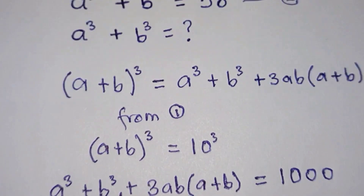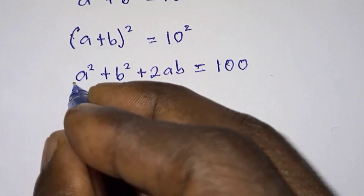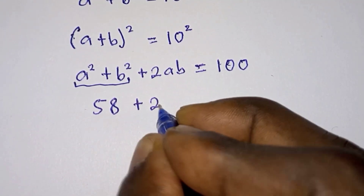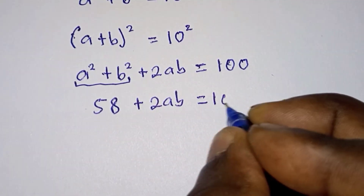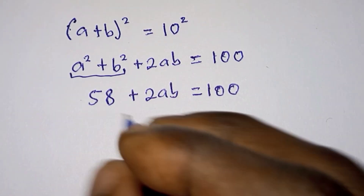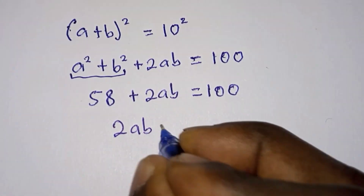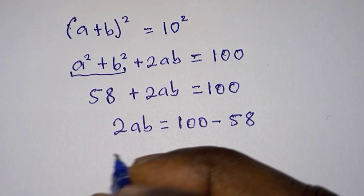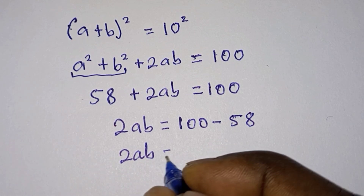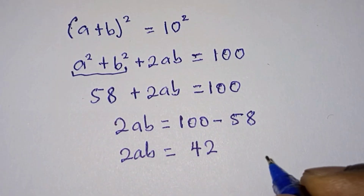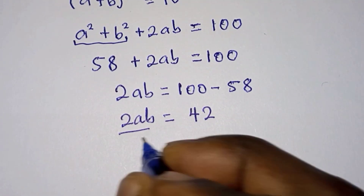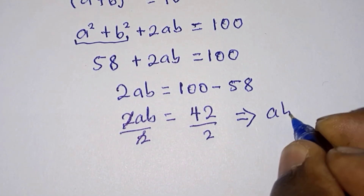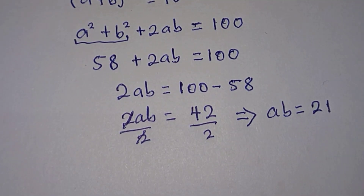This is equal to 10 squared which is 100. We know a squared plus b squared from equation two to be 58, so we get 58 plus 2ab is equal to 100. Transposing the 58 gives us 2ab is equal to 100 minus 58, so 2ab is equal to 42. Dividing through by 2, we get ab is equal to 21.